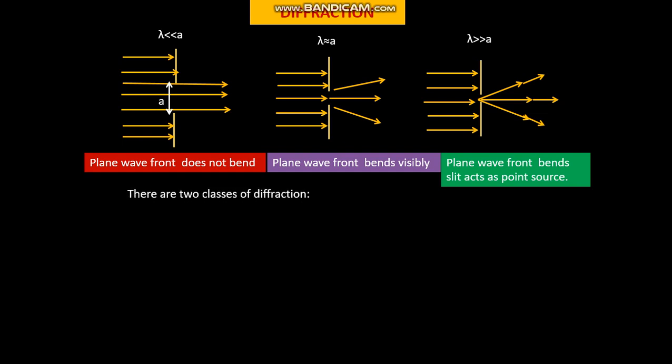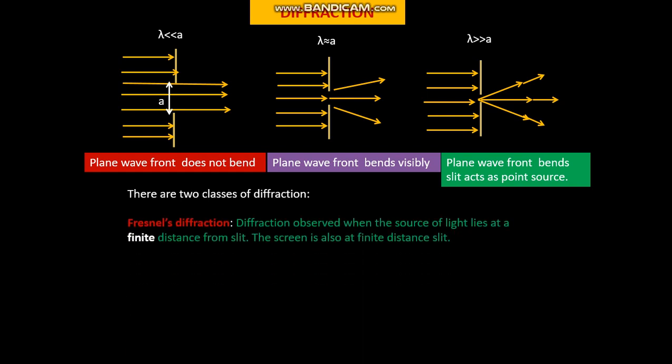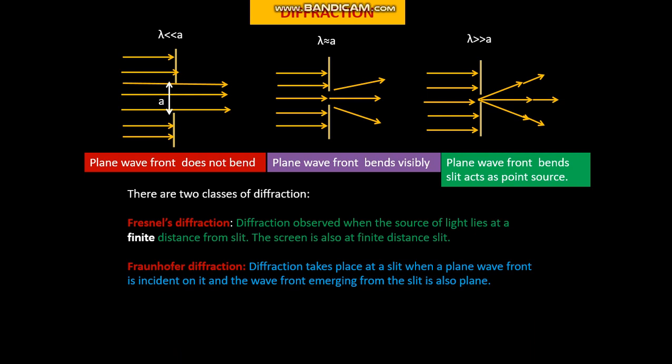There are two classes of diffraction. The Fresnel's diffraction. Diffraction observed when the source of light lies at a finite distance from the slit. The screen is also at a finite distance.